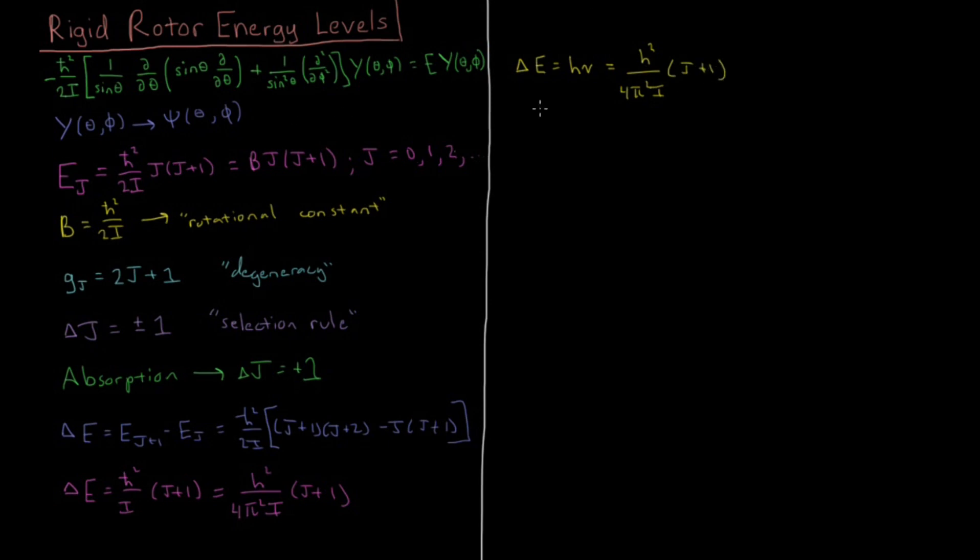So we can see to calculate the energy change, the difference in the two energy levels, it's very convenient that we have it as h, so we can just cancel that, cancel the square, and we have that the observed frequency of a transition between two energy levels, as we have just nu on this side left now, is going to be h over 4 pi squared times moment of inertia times j plus 1. So that's a very nice, straightforward result.